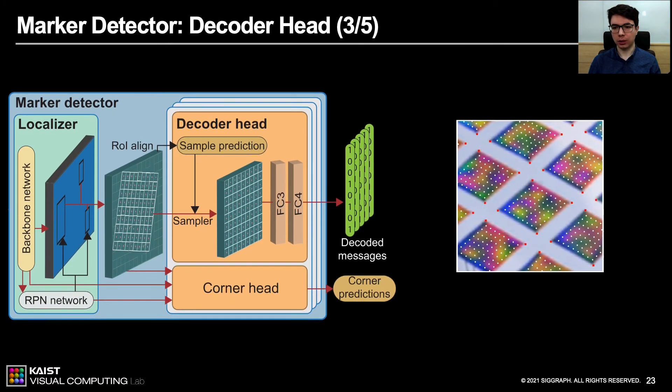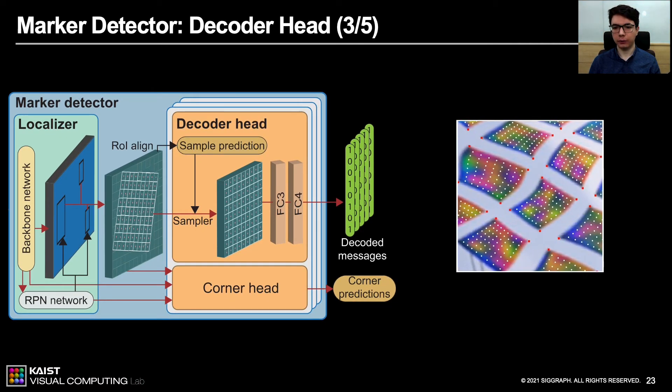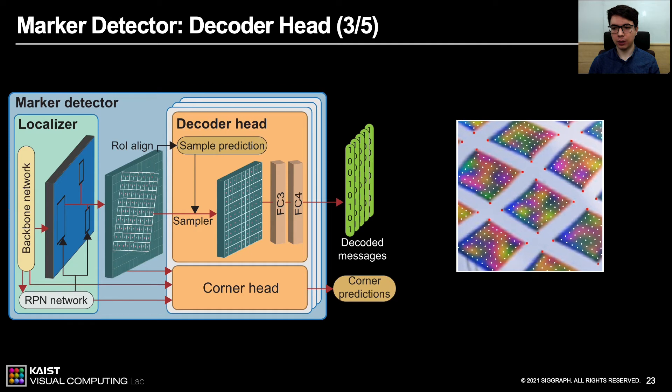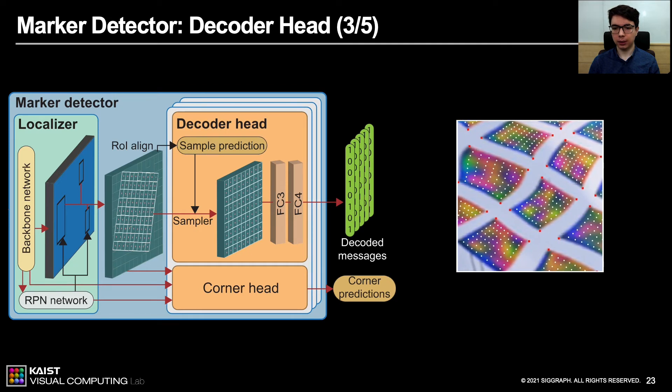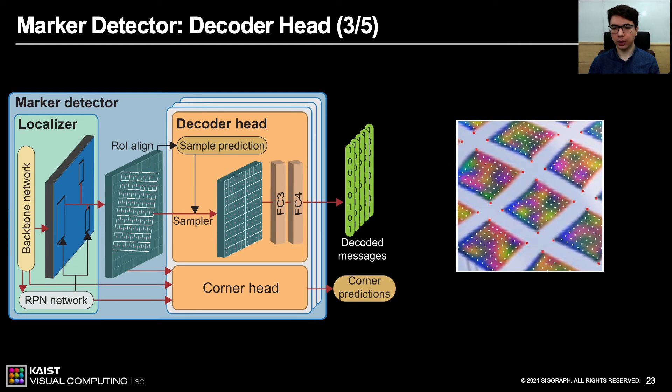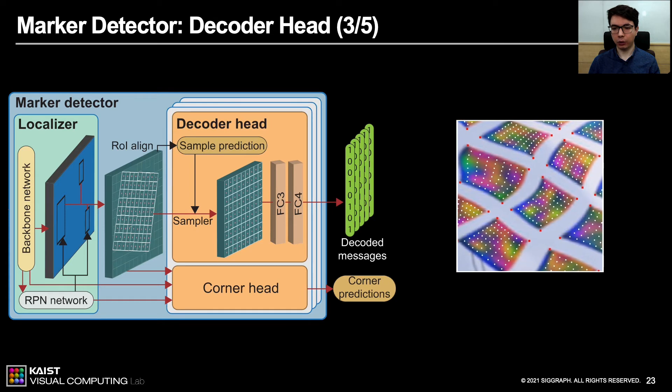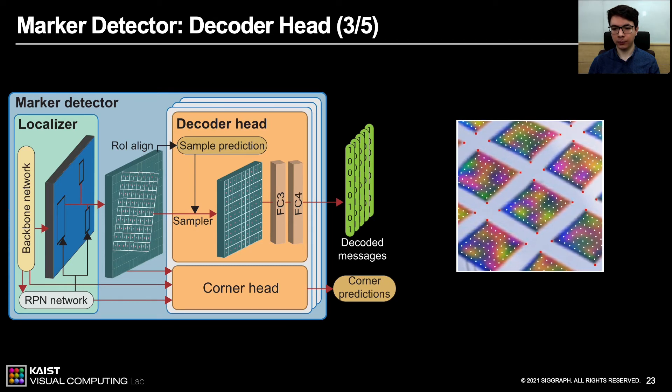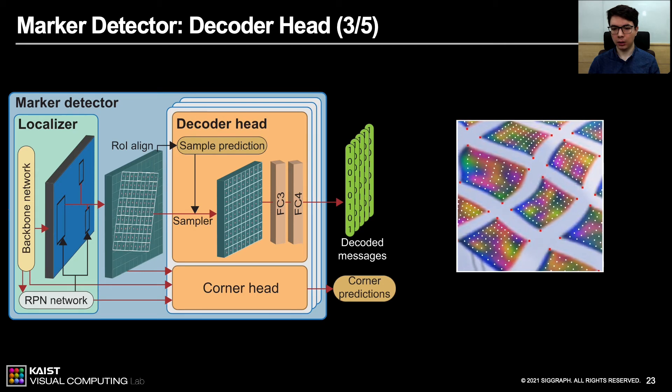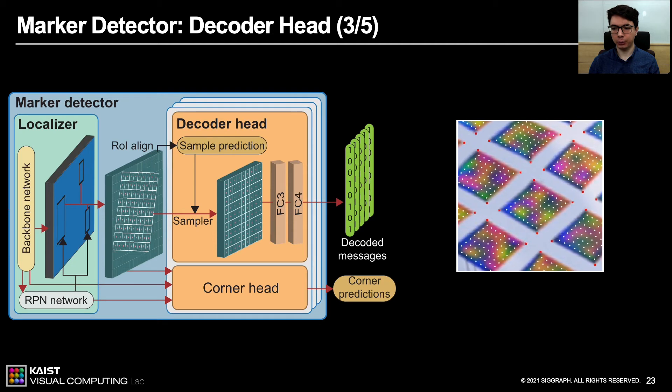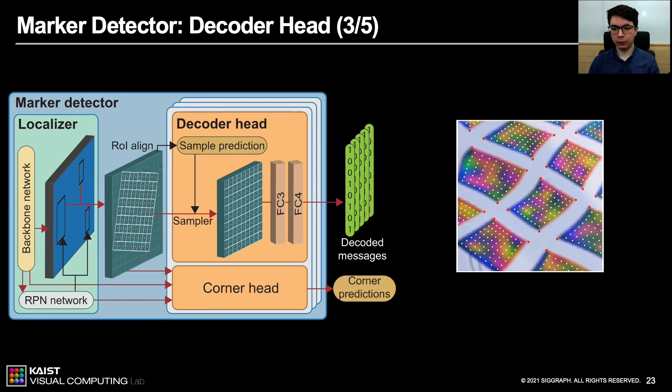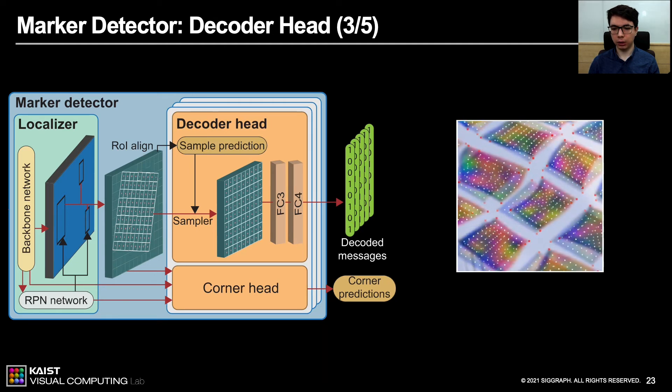For object detection, spatial transformer networks have been used to infer inverse transformation in an unsupervised manner. However, in our network, we know the exact transformations applied to the markers that can supervise the network. To exploit this, as we mentioned earlier, we calculate internal sampling locations. Once sampled, they can convert markers back to the normalized marker domain. Here, you see the white points that represent internal sampling locations. The decoder head attempts to predict these points from the pooled features and resample the pooled features to a normalized domain. Finally, we apply the fully connected layers to decode the messages encoded to the markers.